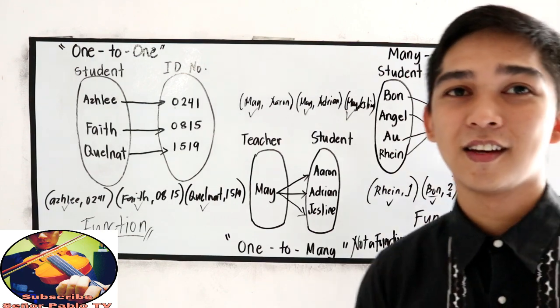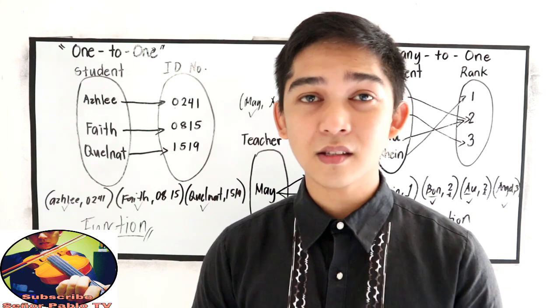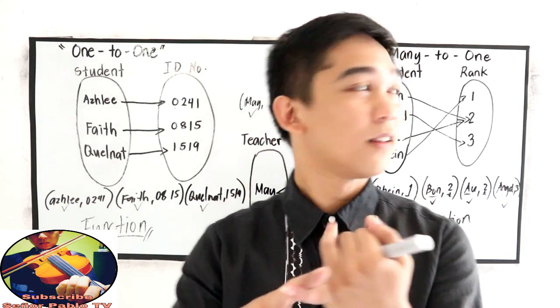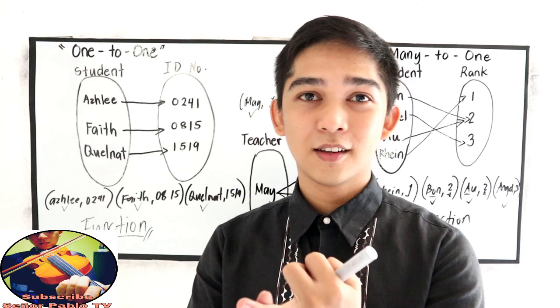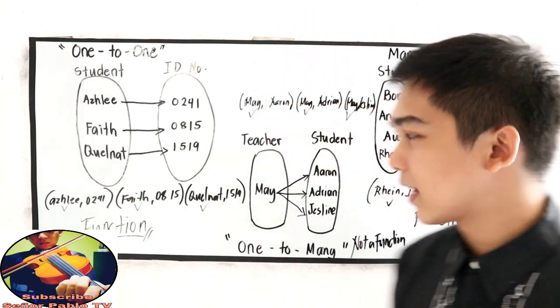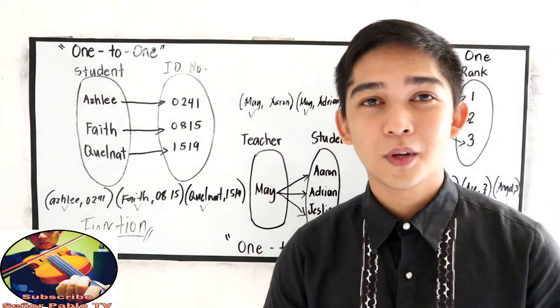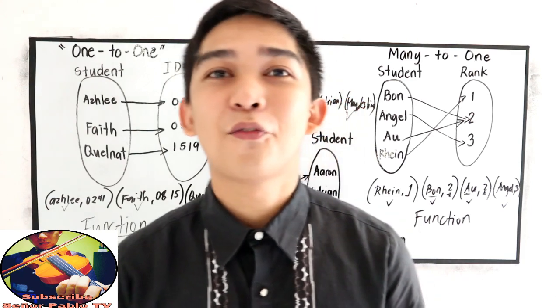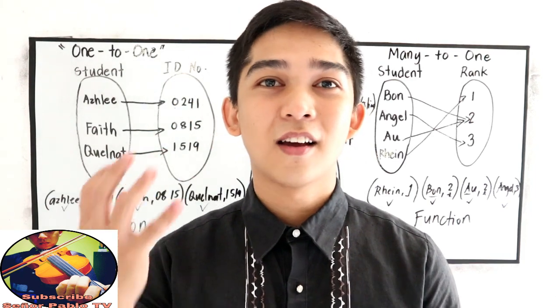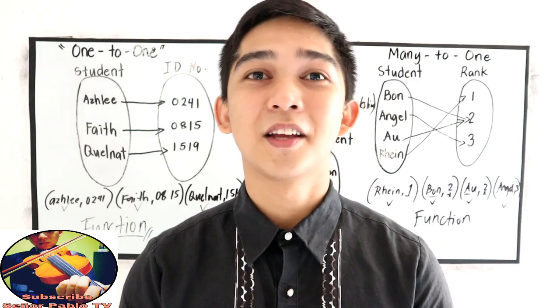Out of three classifications of correspondence, one-to-one and many-to-one, those two are functions, while one-to-many is not a function. So, that is function as arrow diagram or the mapping.